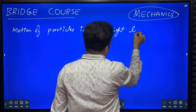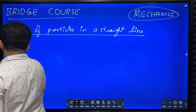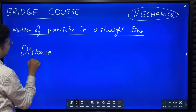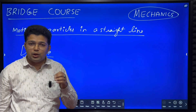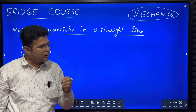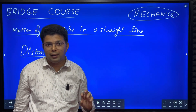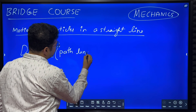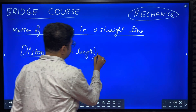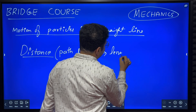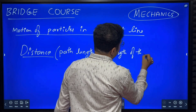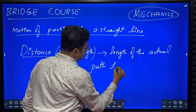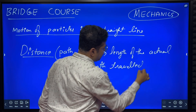In high school, in class 8th or 9th, you might have studied something called distance. What is distance? Distance means the length of the actual path traveled by a body while traveling from point A to point B. Distance is also known as path length.